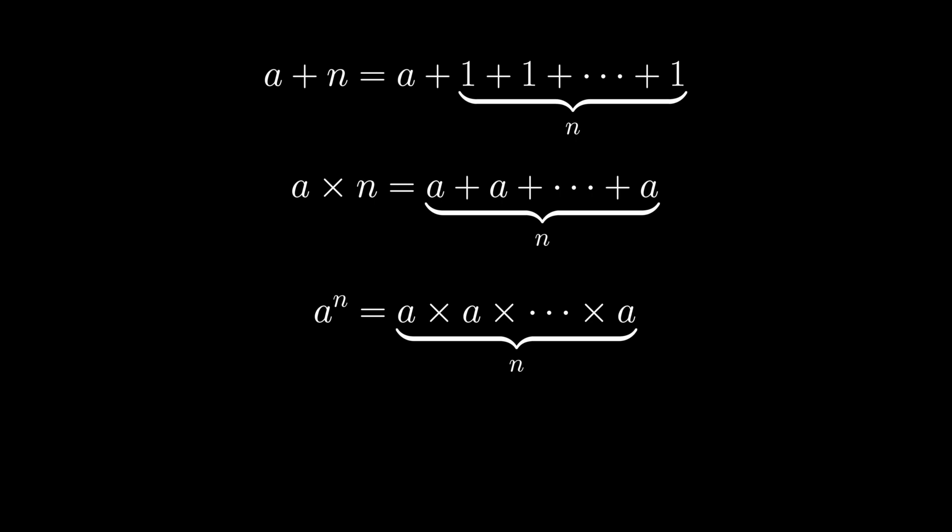Exponentiation is the third, as it is multiplication of a number n times. And finally, Tetration, which is exponentiation of a number n times, is the fourth hyperoperator.